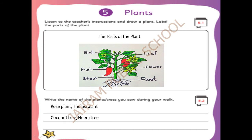After drawing it neatly and correctly, you have to color it. Color the flower, then the fruits, then the leaves in green color. The roots you can give black or brown color. These are the six parts of the plants - draw neatly and color it. Then with the help of a scale you can draw lines and write the parts of the plant.